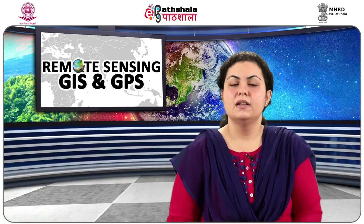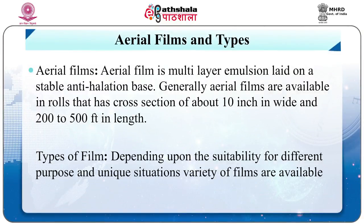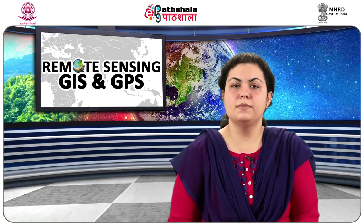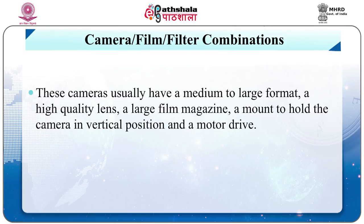Aerial film is a multi-layer emulsion laid on a stable anti-halation base. Generally, aerial films are available in rolls that have a cross-section of about 10 inches wide and 200 to 500 feet in length. Depending upon the suitability for different purposes and unique situations, a variety of films are available. Panchromatic and natural color films are the two most important and commonly used films. These two films along with infrared and false color form the basic media used in aerial photography.